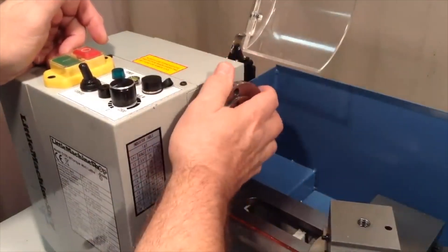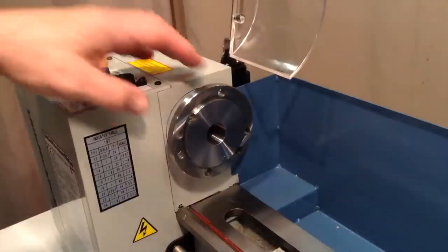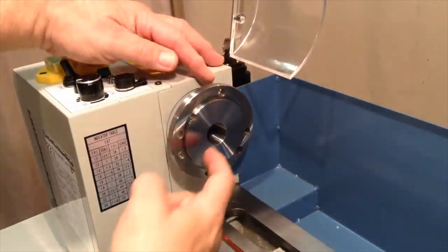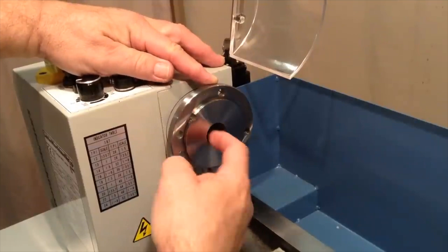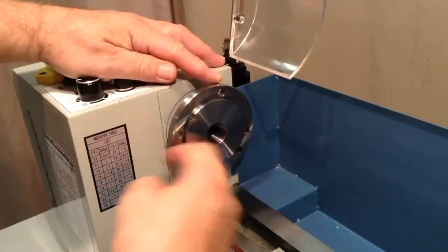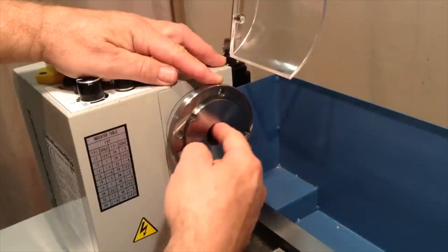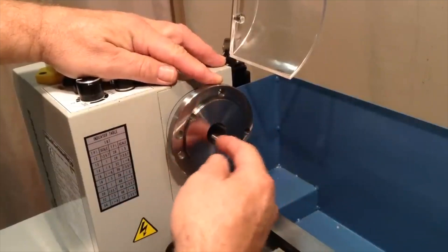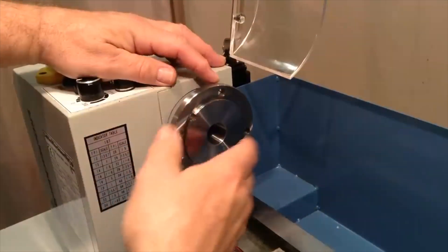There's the spindle and as you can see there's a central bore here which has a number 3 morse taper I believe it is. Some of the lathes, not all of them, sometimes they come with a dead center that fits in here and I'll check the accessories box and see if there is one.